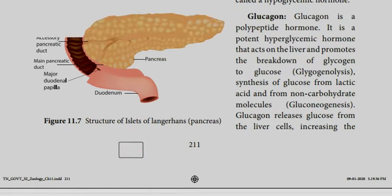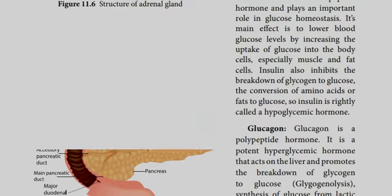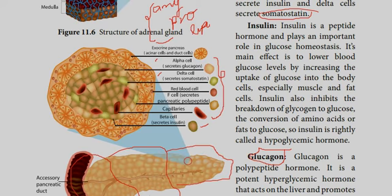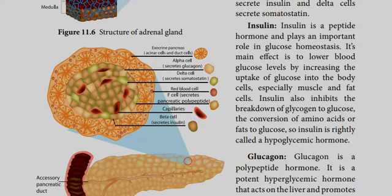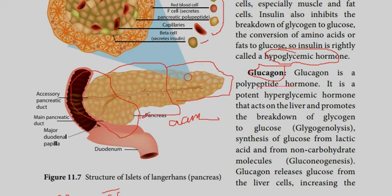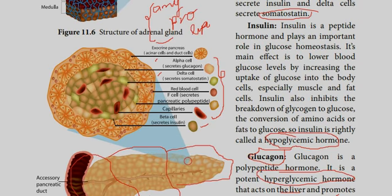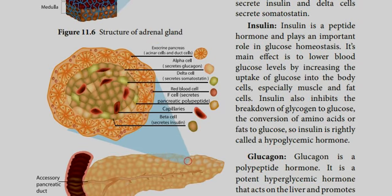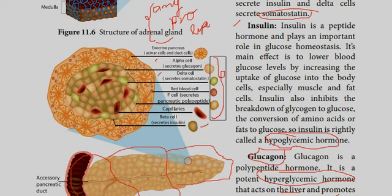Insulin has a hypoglycemic effect — it lowers blood glucose. When glycogen is broken down in the liver, glucose is released and increases in the blood. If glucose increases in the blood, insulin increases in response. If there is insulin deficiency, we have diabetes.